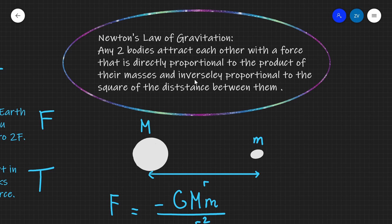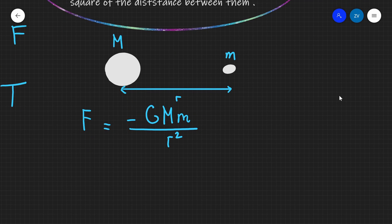This means that if I have any two objects M and m, those two objects are going to attract each other via the same gravitational force F. This object will be attracted to the other via force F, and the other object will also experience exactly the same force but in the opposite direction.